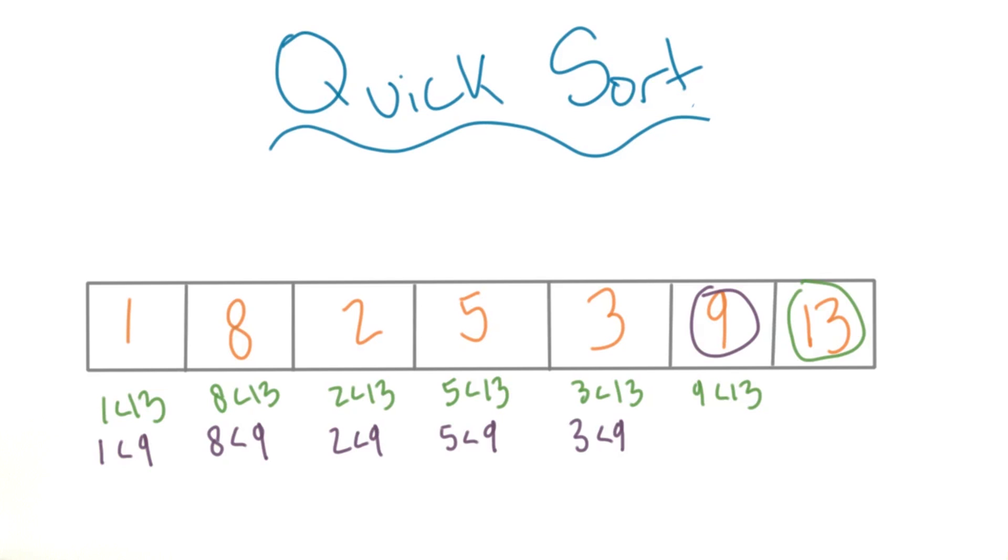Which means that the worst case of quicksort is actually big O of n squared. For something called a quicksort, that's a really terrible efficiency. However, quicksort is useful for two main reasons.